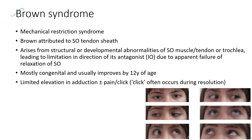Next is Brown syndrome, a mechanical restriction syndrome. Brown attributed this condition to the superior oblique tendon sheath. It arises from structural or developmental abnormalities of the superior oblique muscle, tendon, or trochlea, leading to limitation in the direction of its antagonist — the inferior oblique — due to apparent failure of relaxation of the superior oblique. It is mostly congenital and usually improves by 12 years of age. In Brown syndrome there is limited elevation in adduction, with or without pain or click, as shown in these gaze images.